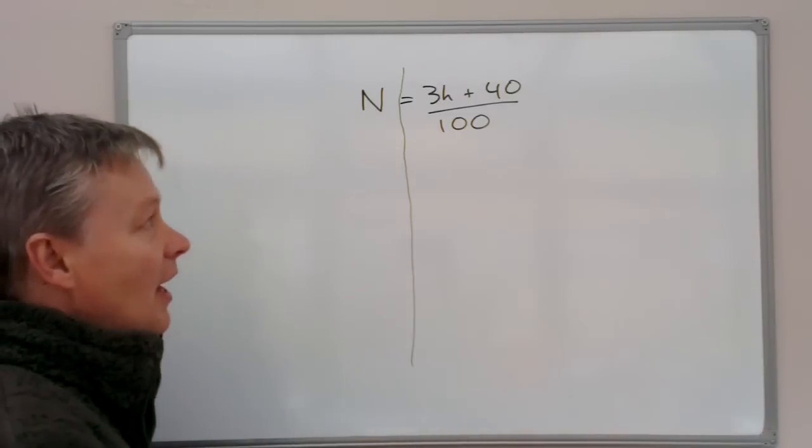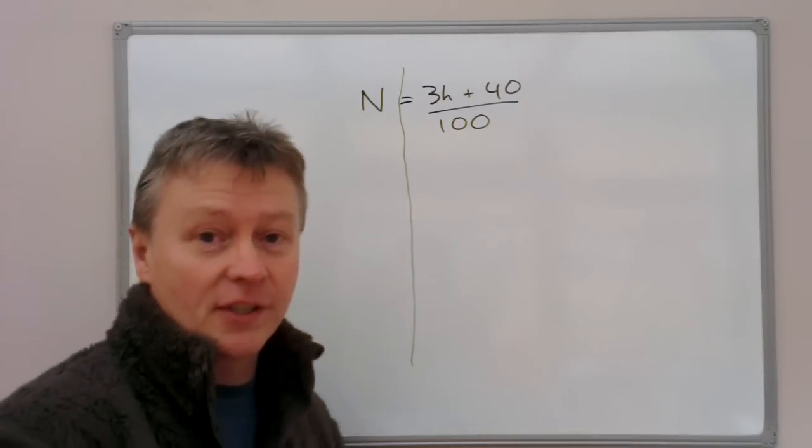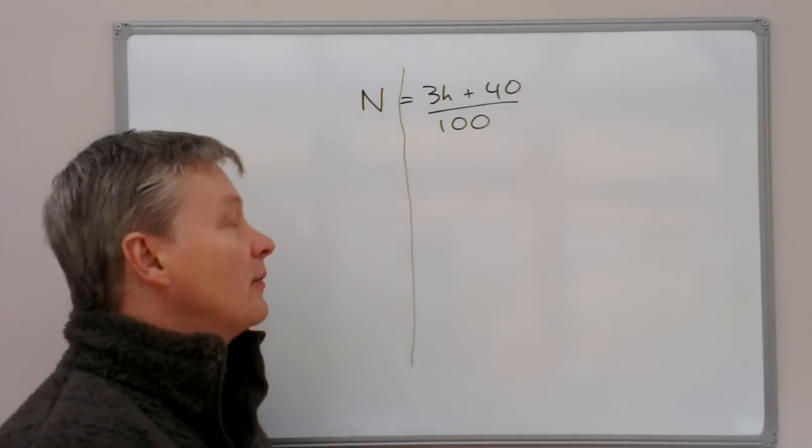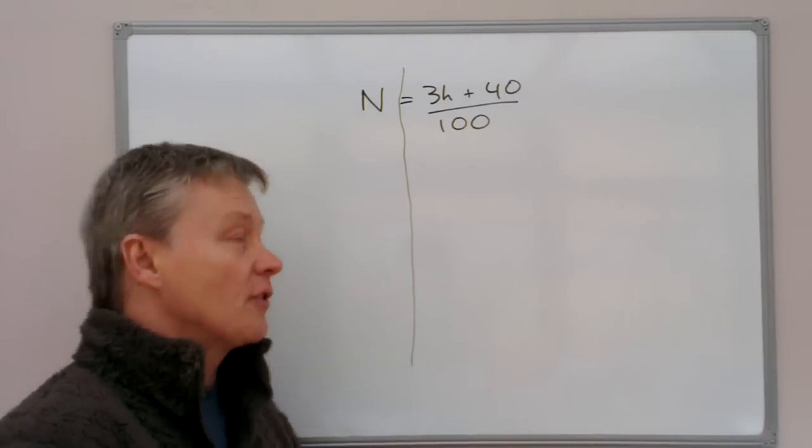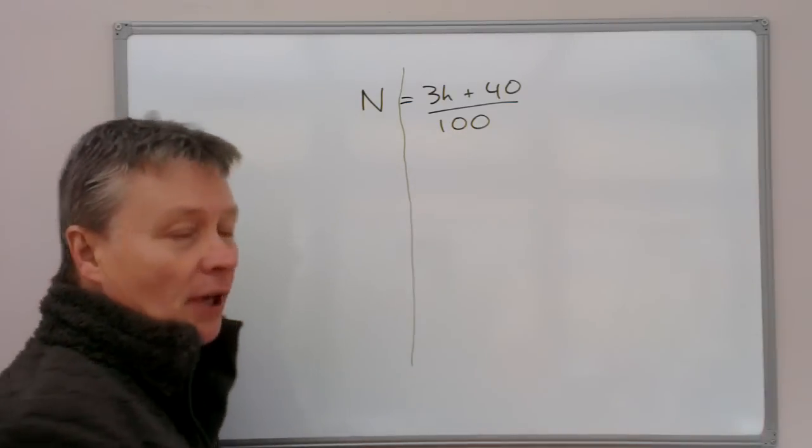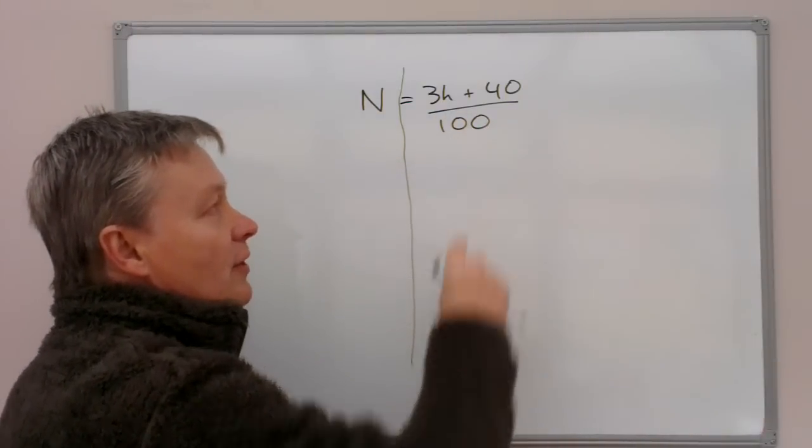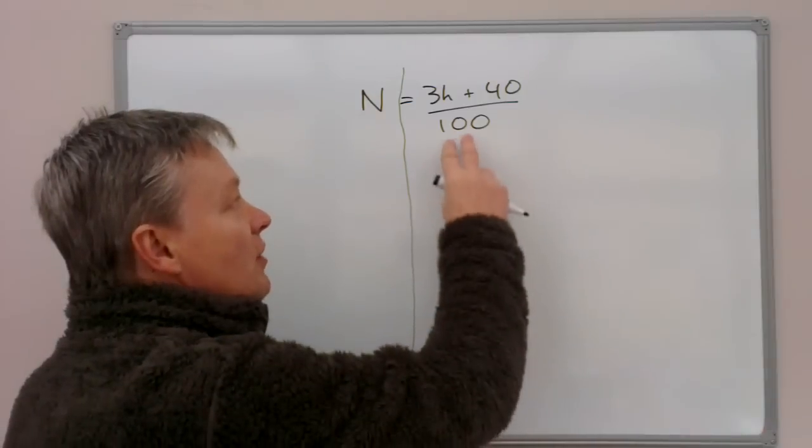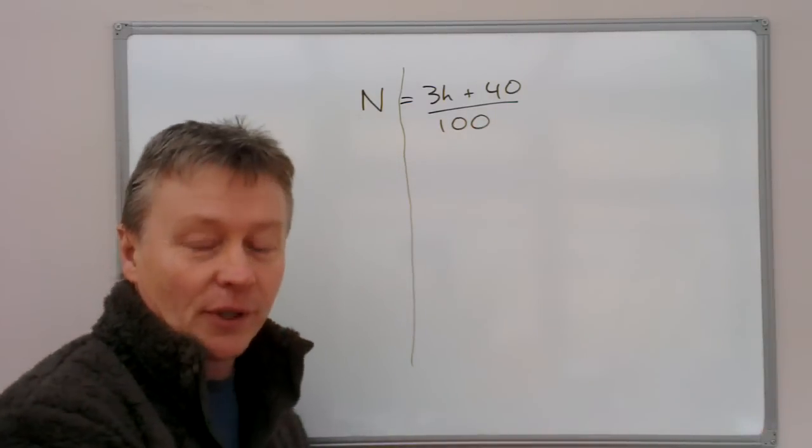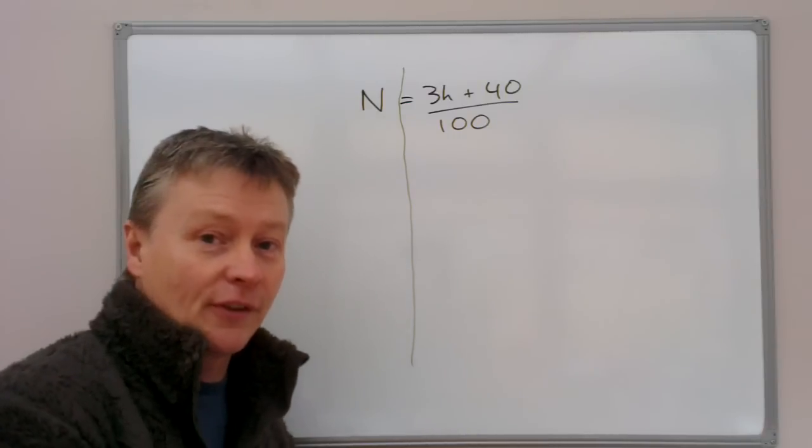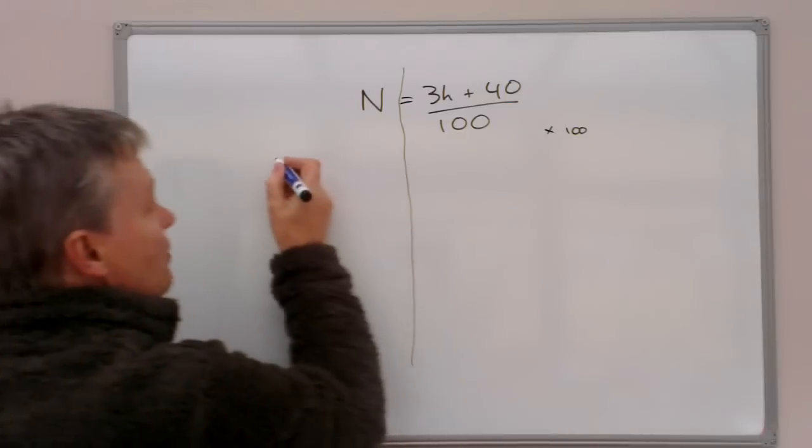So we've got N this side and on this side we have a fraction and the fraction is 3H plus 40 divided by 100. So the thing about a fraction is that if we multiply both sides by 100, we can get rid of this division which is making life a little bit more difficult. So I'm going to put a note that I'm going to multiply both sides by 100.